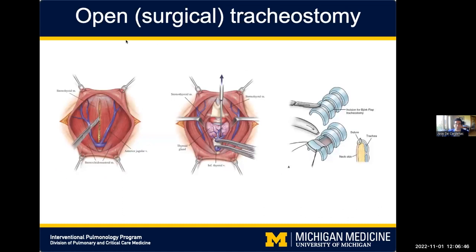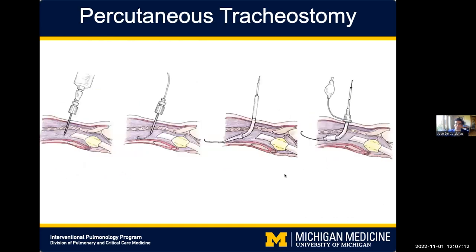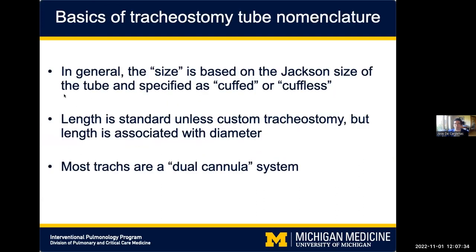To briefly review: a surgical tracheostomy involves a real incision with dissection of the thyroid gland and creation of a window within one of the tracheal rings — it's actually a hole they're creating. This is quite different from a percutaneous tracheostomy, which is mainly just dilation. The important thing with a surgical tracheostomy is that you can control bleeding, but also the stoma is better formed — better formalized, as we say in the lingo.